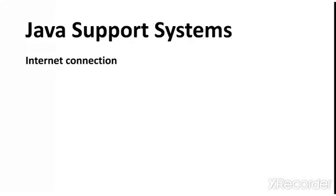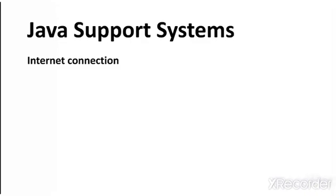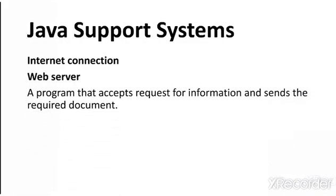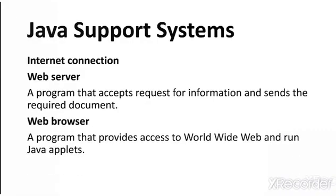Let us learn about the Java support system, which tells us the components required for building a successful Java application. A very good internet connection is required. A web server is also required — a web server is a program that accepts requests from the client and sends back the requested information or document. A web browser is required; it is a program that provides access to the World Wide Web, which is needed for executing a Java application.